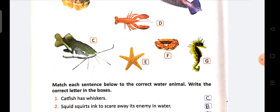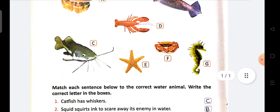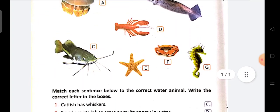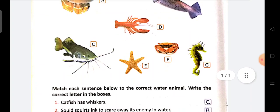Squid squirts ink to scare away its enemy in water. Iski body pper. Yeh joh aap ink dhek raha hai na beta. Yeh joh color hai iska. Yeh iski ink ki wajay se. Iski joh enemies hai. Dushman hai. Woh isse dure raha te hain.